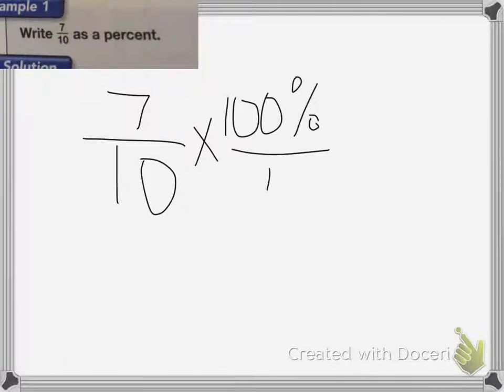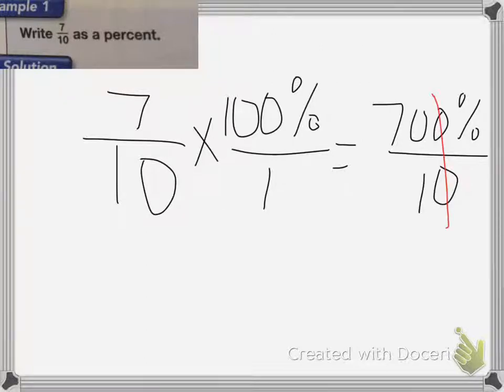I make that a fraction, and I end up with 700% divided by 10. Remember, you can cancel out zeros. So my answer will be 70%.